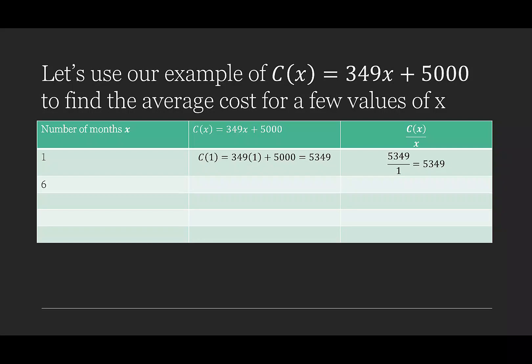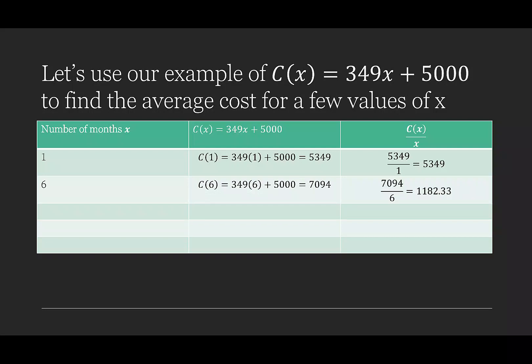So let's increase that to six months. In six months, we've paid a total of 349 times 6 plus 5,000, which is $7,094. If we divide that amount by six, we can see we've paid an average of $1,182.33.